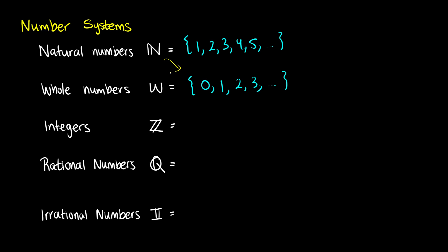Integers are all the countable numbers — so whole numbers and natural numbers — but it includes the negative numbers as well. So it starts from negative infinity and includes negative 3, negative 2, negative 1, includes the whole number 0, and then goes on to include all of your natural numbers. These are essentially all the numbers that do not have a decimal point.